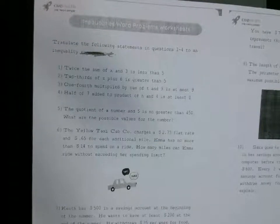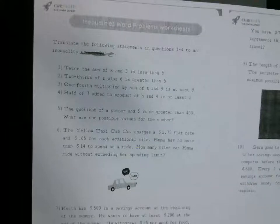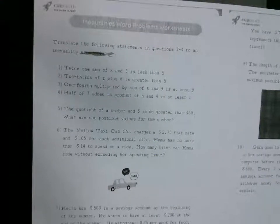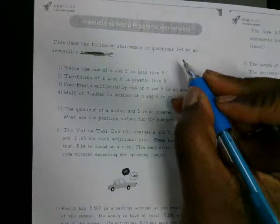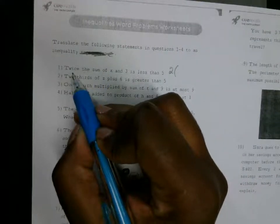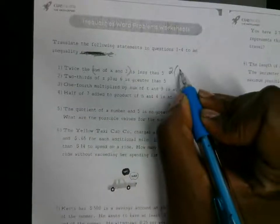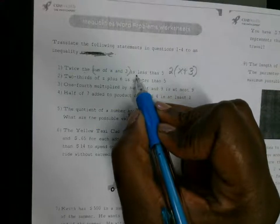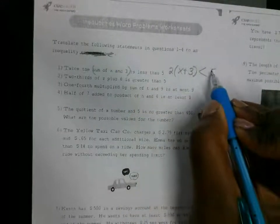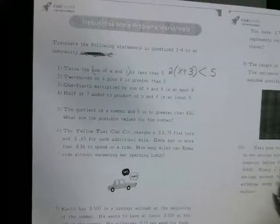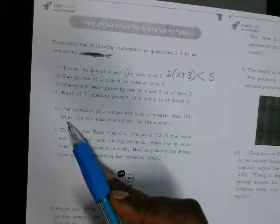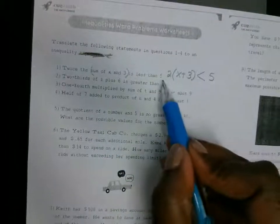The first one — we're translating. See if you can do it. Twice the sum of x and 3 is less than 5. Most of us got this right. Twice means multiply by 2, and you're multiplying the sum of these two numbers — so that's x plus 3. And that is going to be less than 5. It doesn't say solve it; it just wants you to write the inequality. The ones they want you to solve are the other ones, 5 through 10.